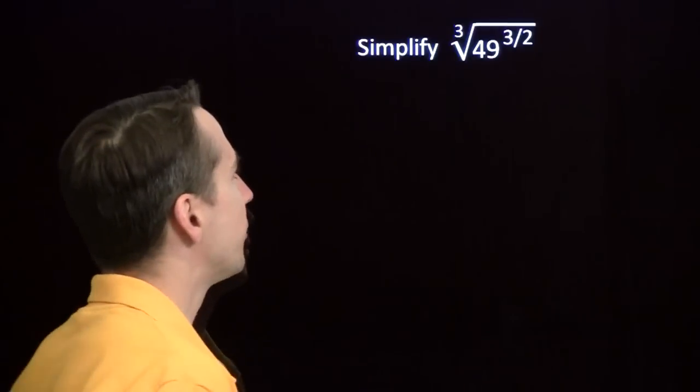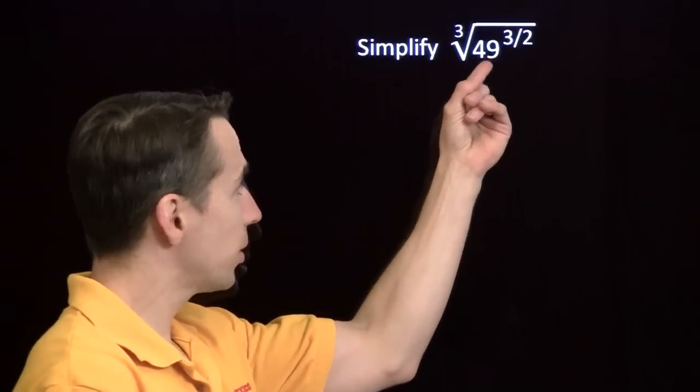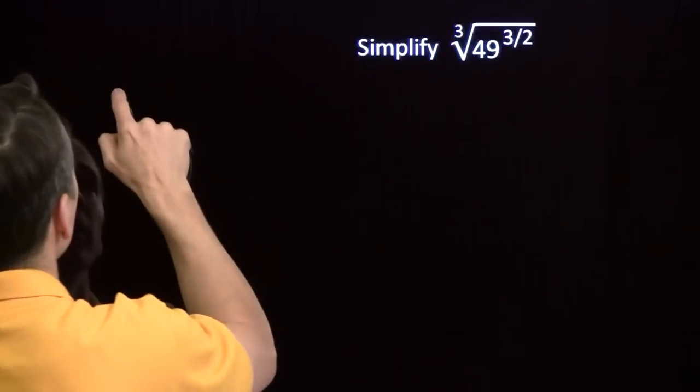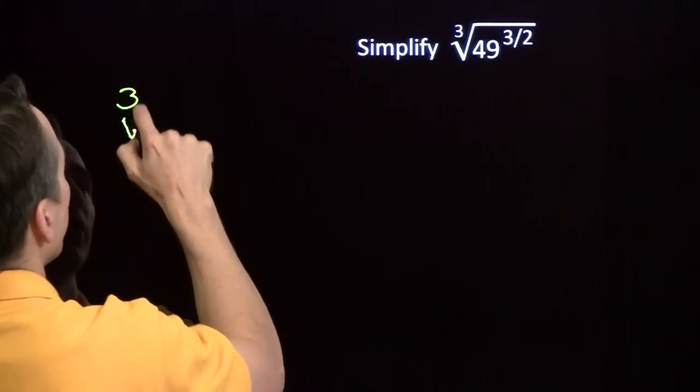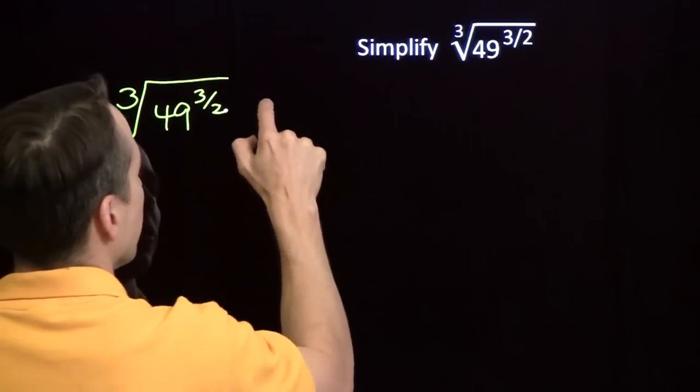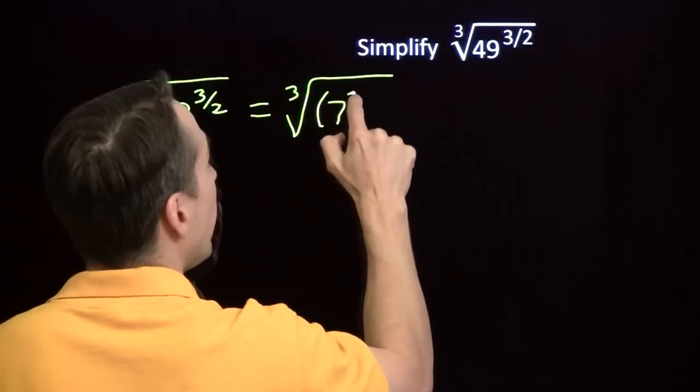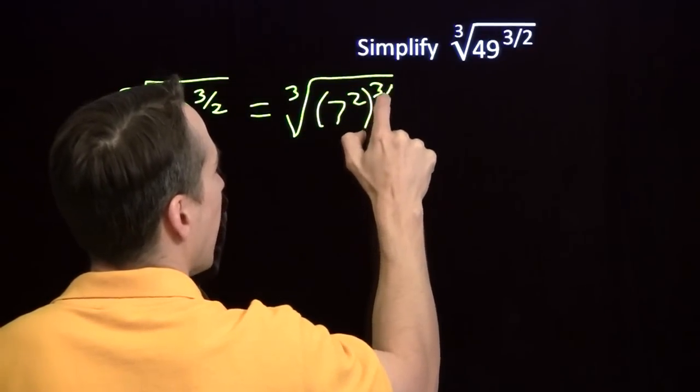We're going to tackle this problem two different ways. First, we're going to focus on that fractional exponent right here, because we know how to handle that. That 49 is 7 squared, so we can write 49 to the 3 halves as 7 squared raised to the 3 halves power.